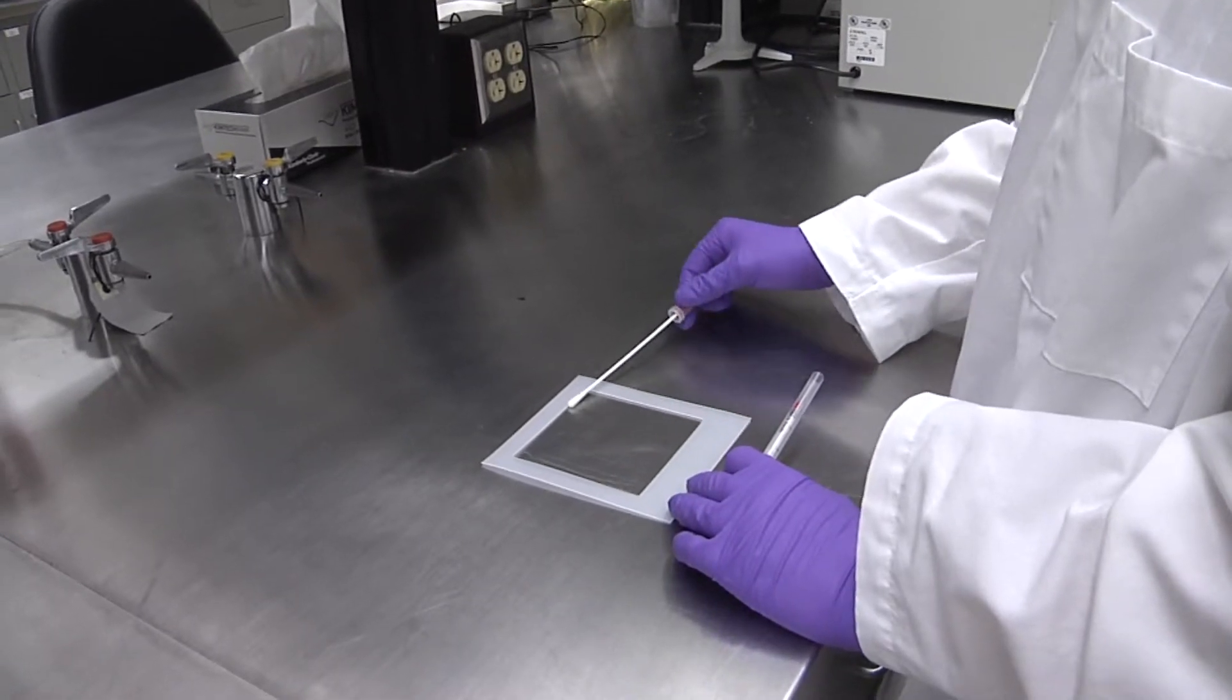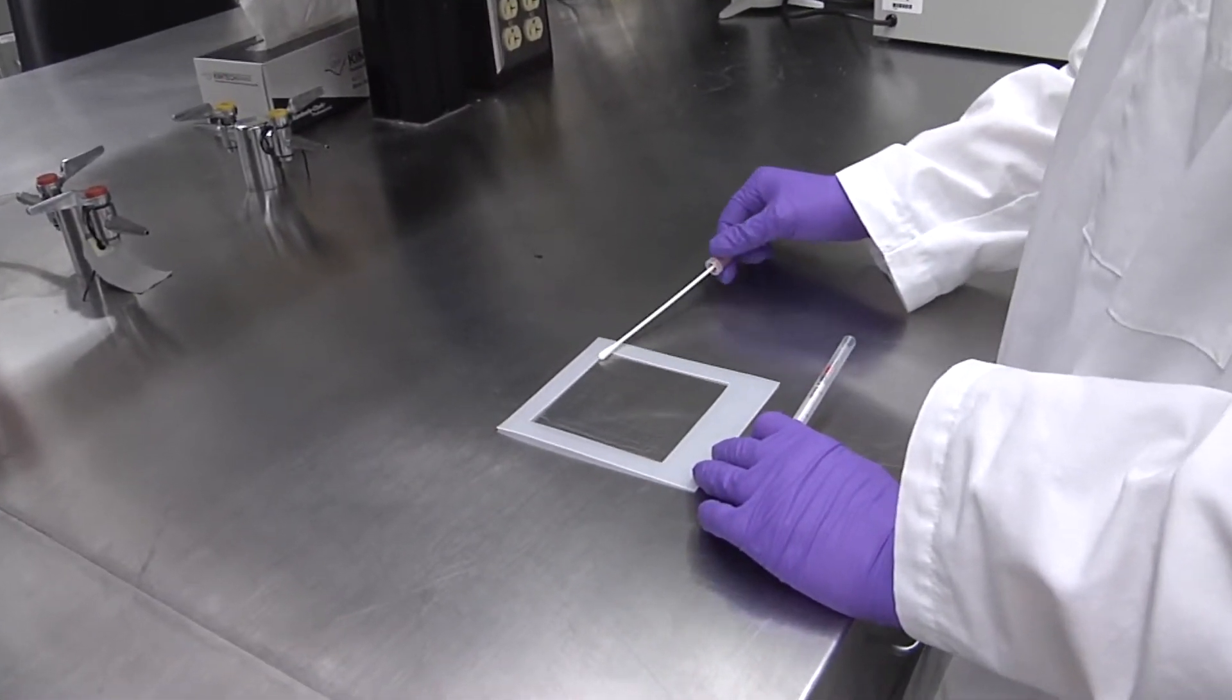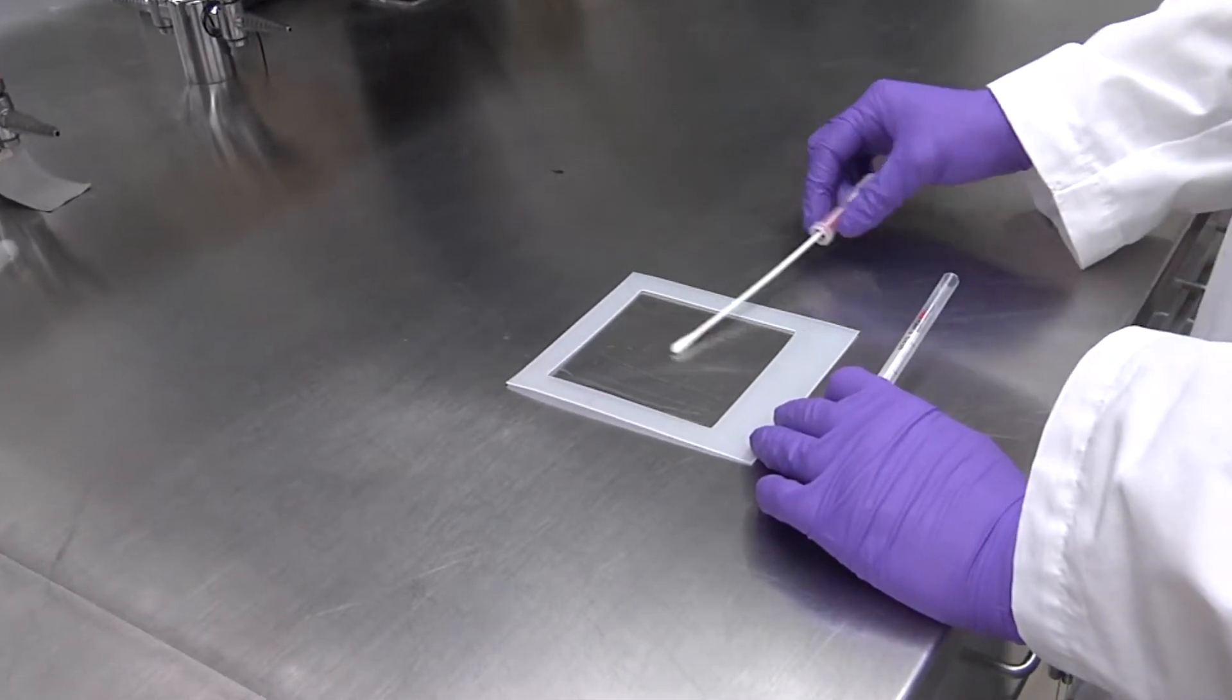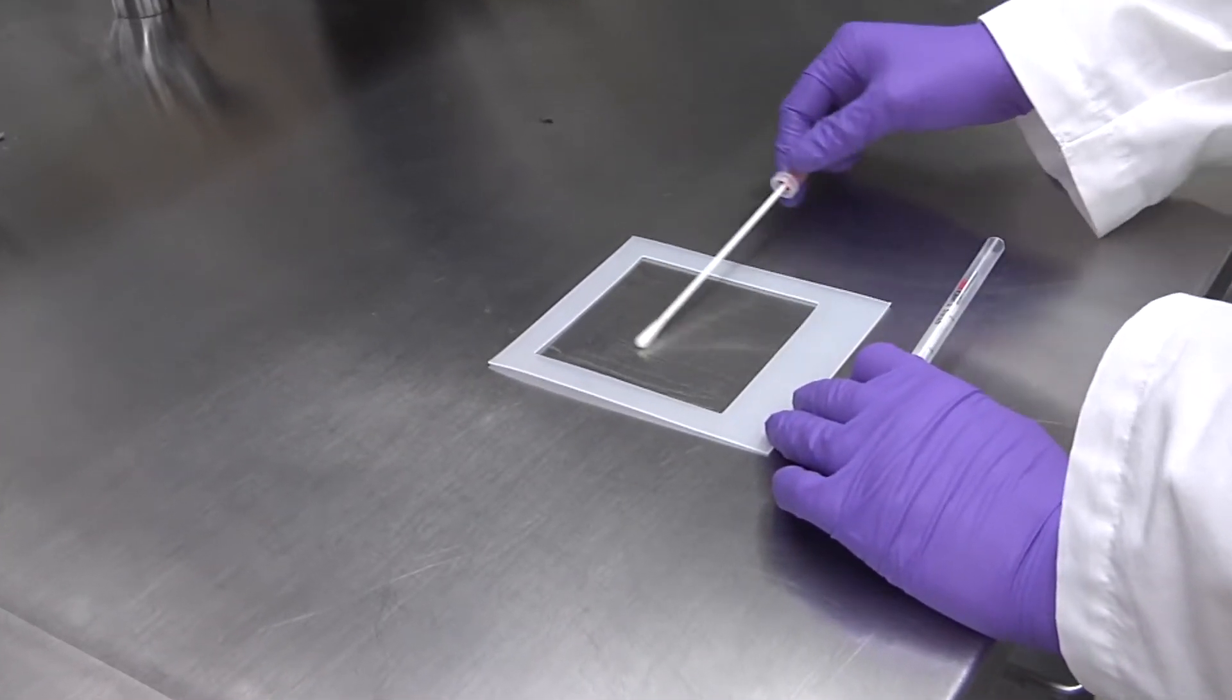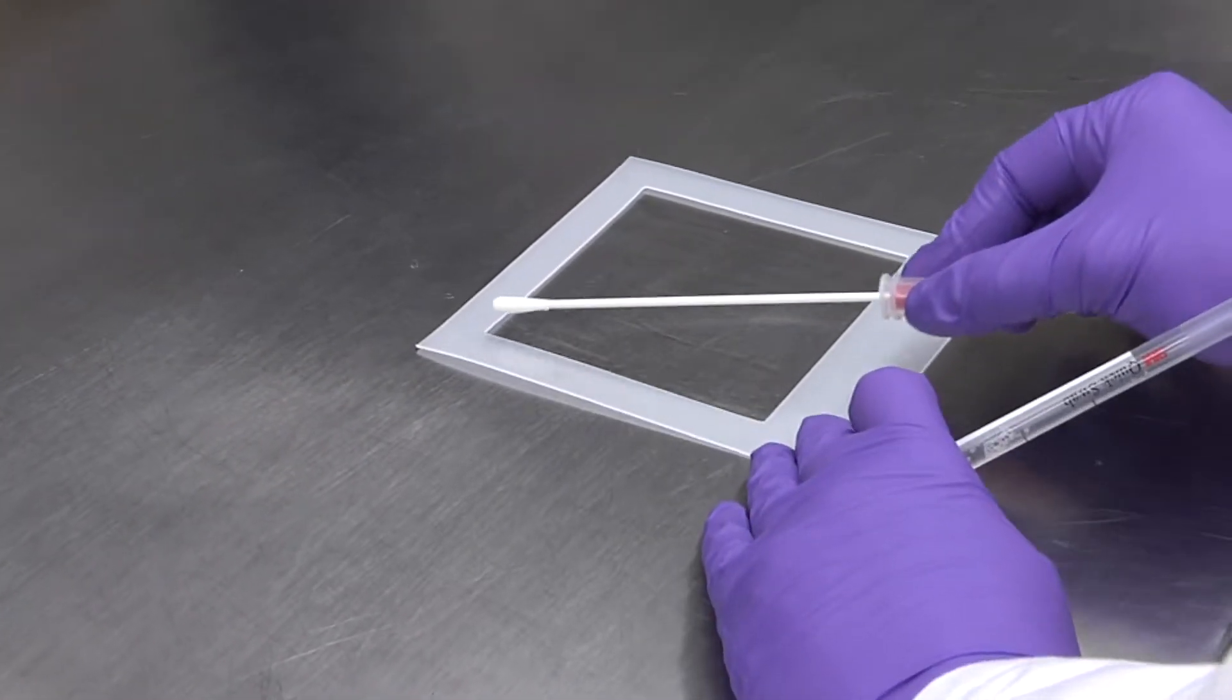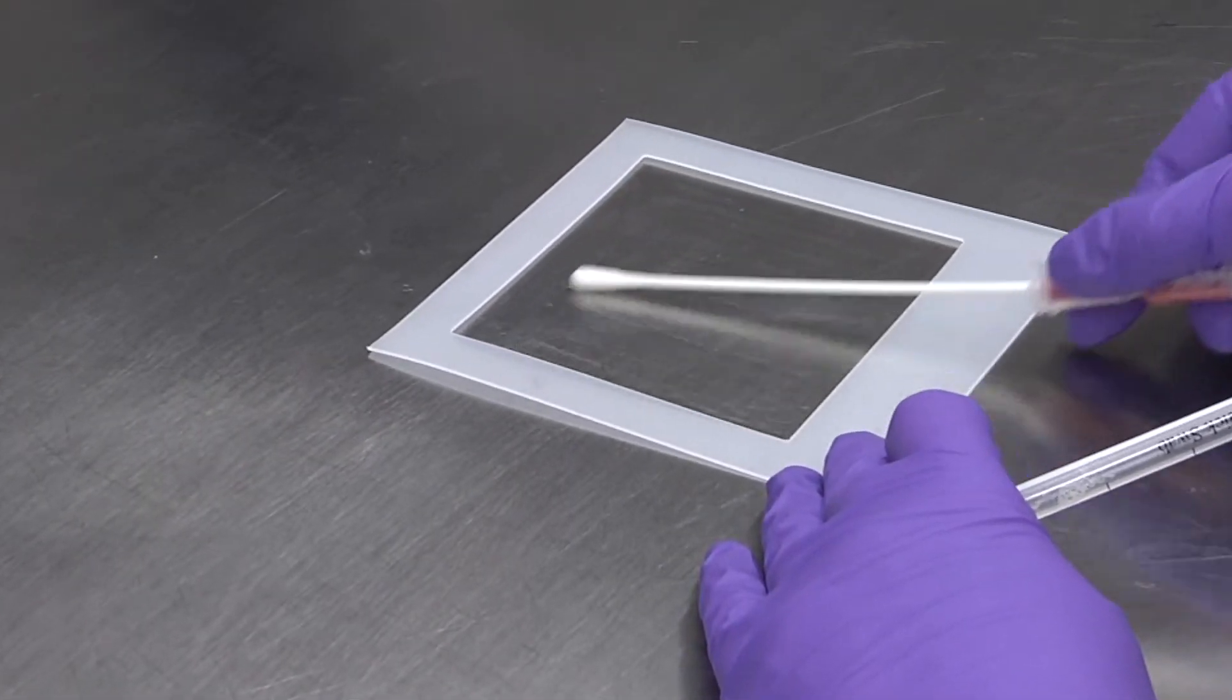As you wipe, roll the swab slightly as you go back and forth across the 2 by 2 inch area. Then you will go in the opposite direction with the same swab, perpendicular to the swab motion just made. You will be essentially swabbing the same surface twice.